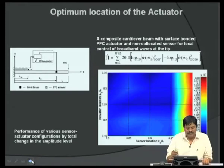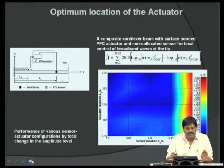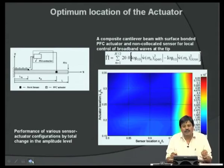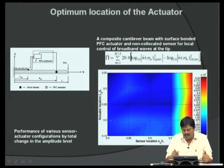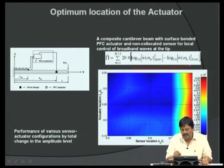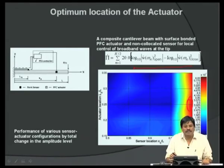An important consideration is where to place the actuator and sensor, since the sensor signals the controller to trigger the actuator. A plot of sensor location versus actuation location shows the level of response quantified by the ratio of open-loop to closed-loop out-of-plane displacement. The optimal sensor location for maximum sensitivity in actuation is clearly identifiable from this analysis.